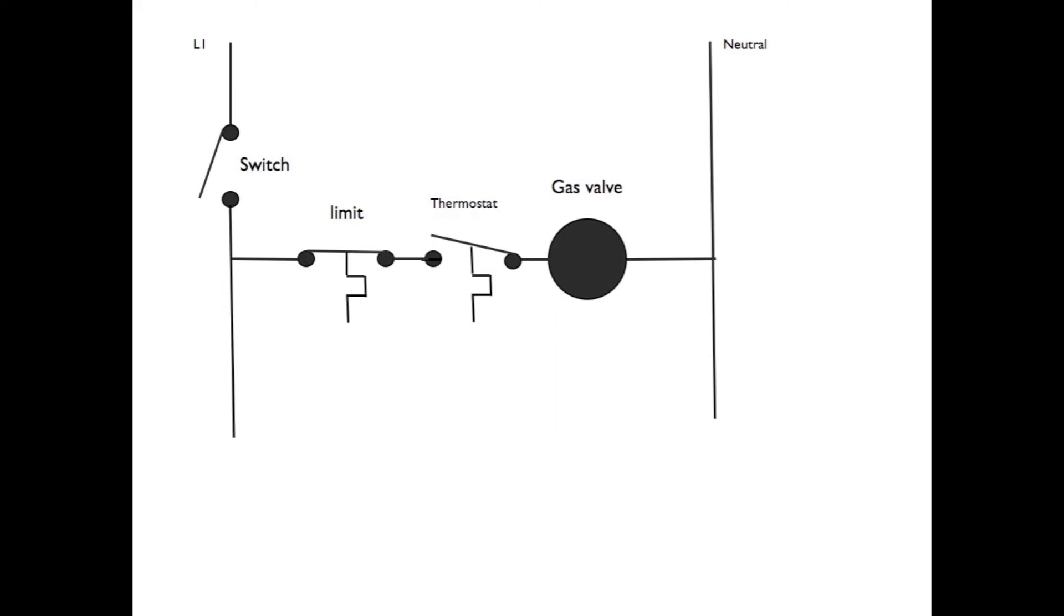They would open on a rise, like in this case, a rise in temperature. If the furnace got too hot, then that would open and it would shut down the gas valve.